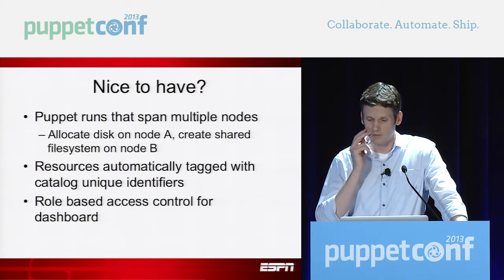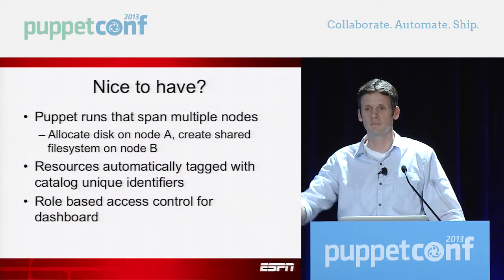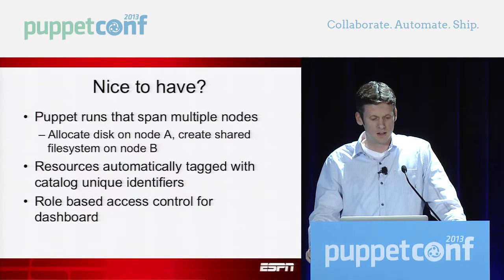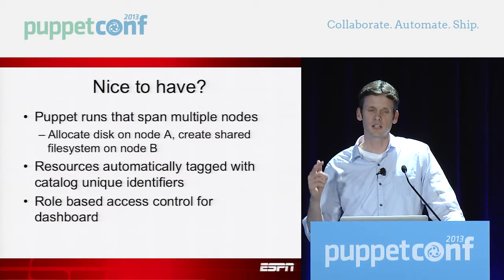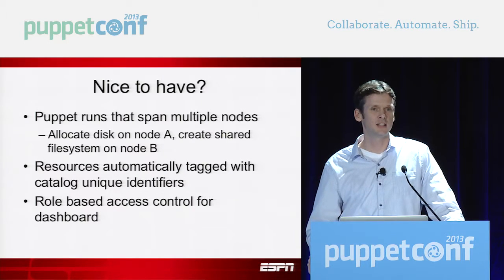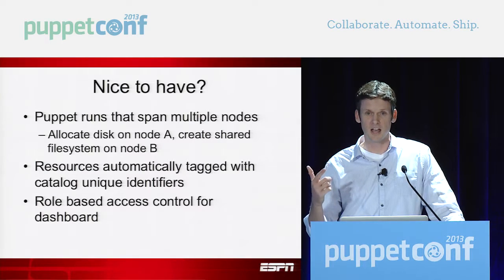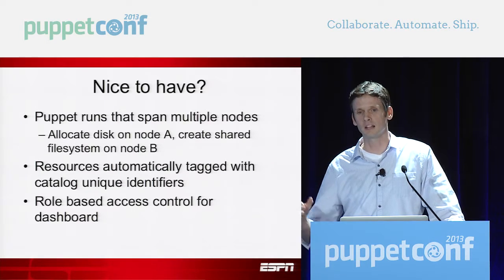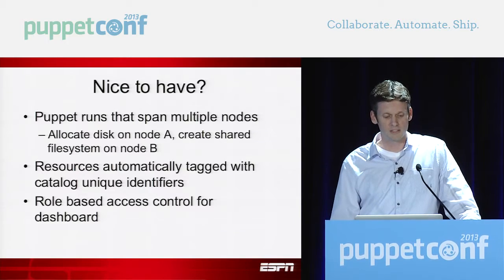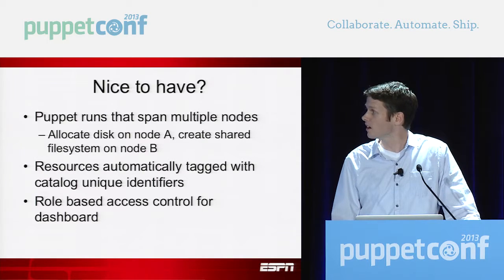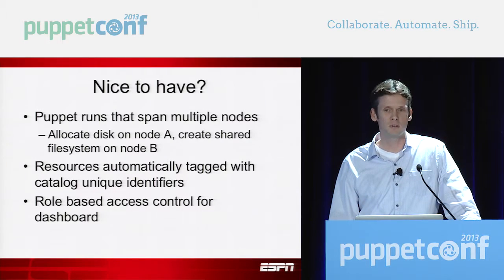Nice to haves: since we do a lot with video and a lot of shared file systems, it'd be really nice to do Puppet runs across multiple nodes so one Puppet run would update this node and then update the second node as well. Also, resources should be automatically tagged with catalog-unique identifiers — when you push a single resource using tags in MCollective, it searches the catalog to find which resources to apply, and it's your responsibility to ensure that's unique. But since the resource titles are already unique within the catalog, if MCollective just supported that in their tags, it'd be super easy to push exact resources without accidentally getting others. And of course, role-based access control for our dashboards — Puppet Labs says they're working on it. That was our experience going from zero to 60 with Puppet.